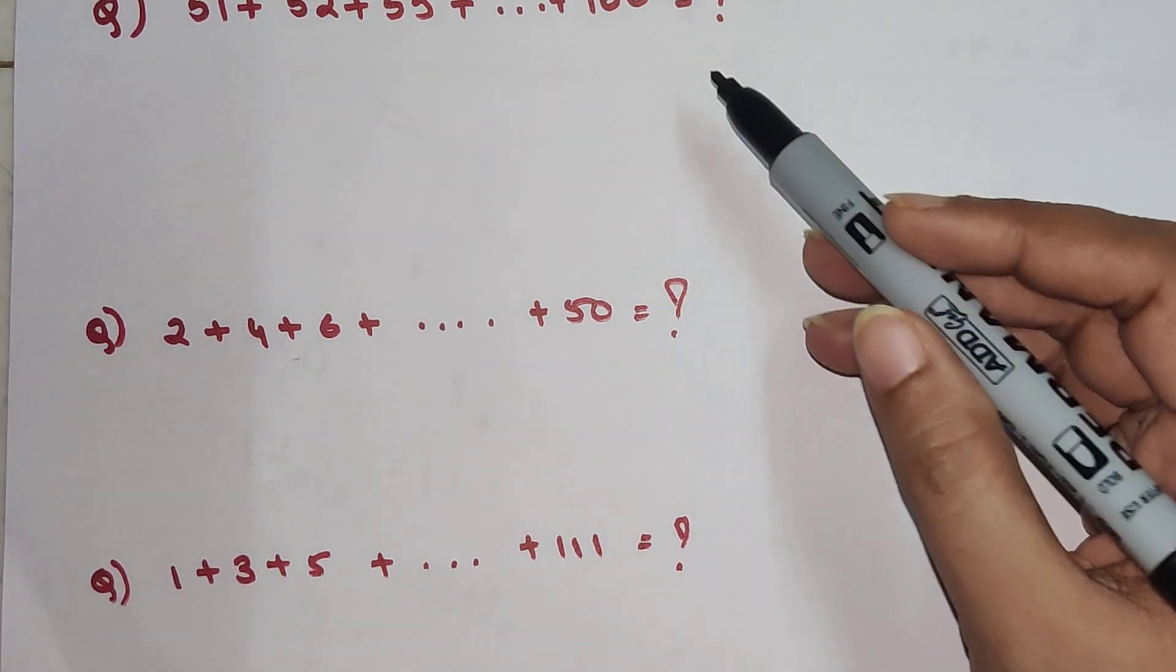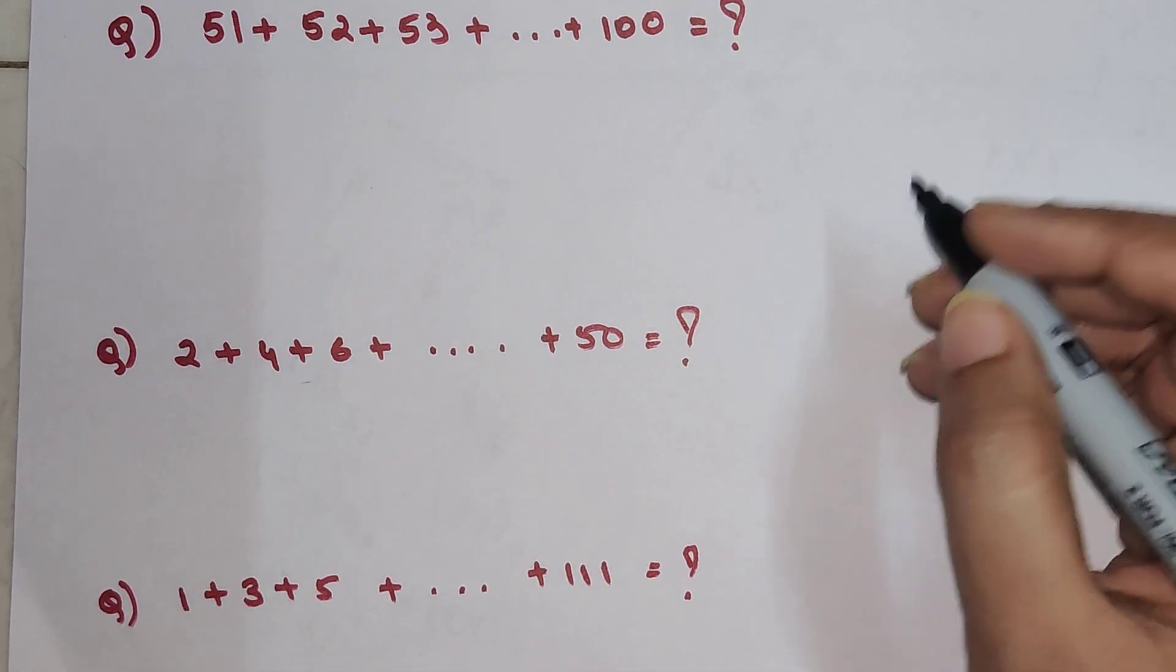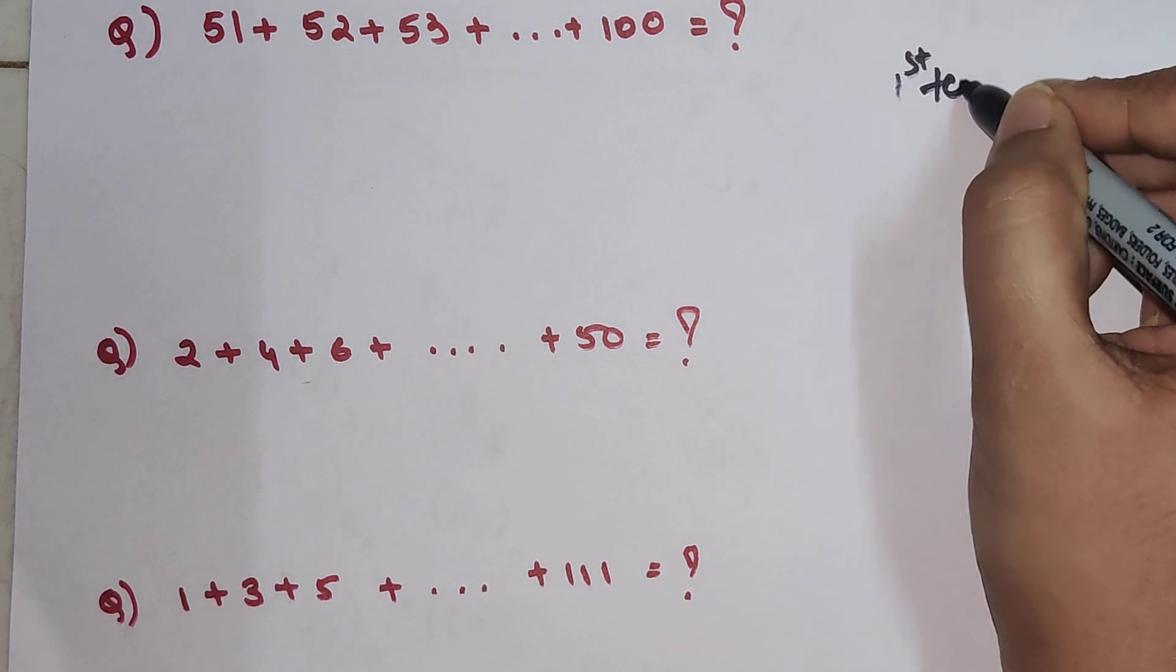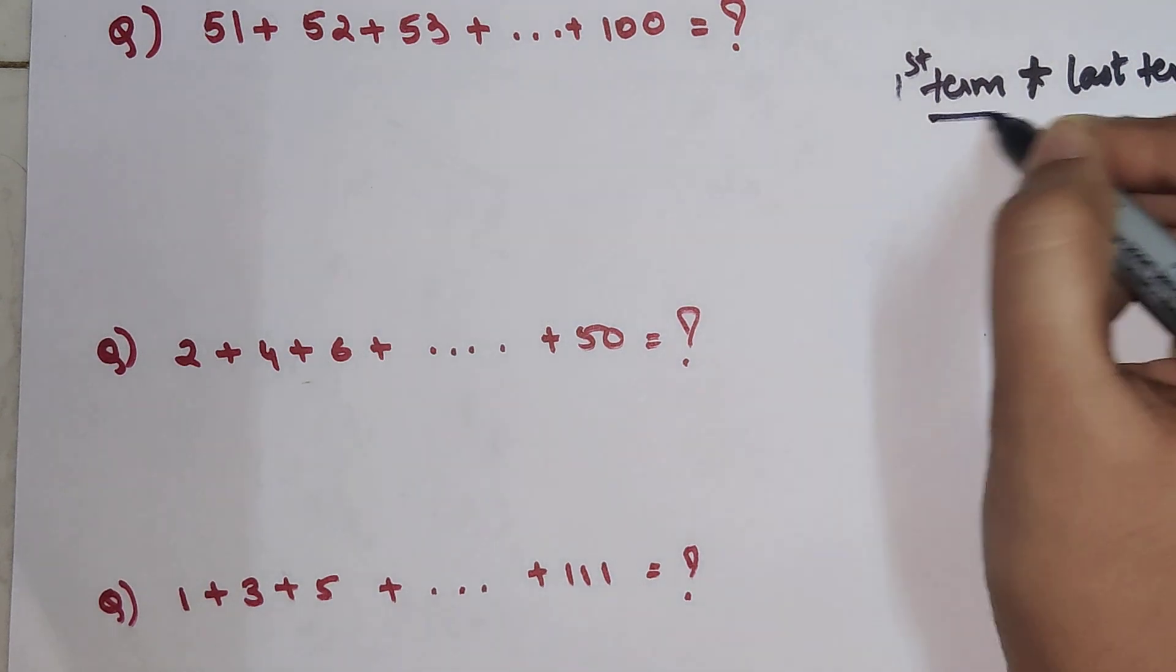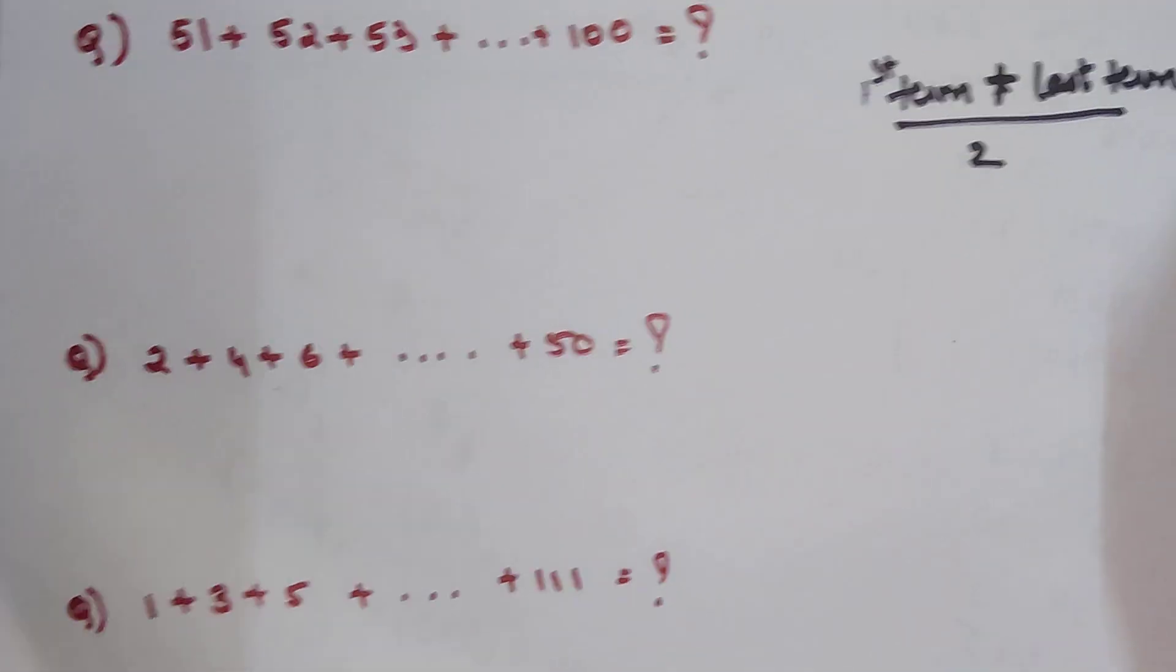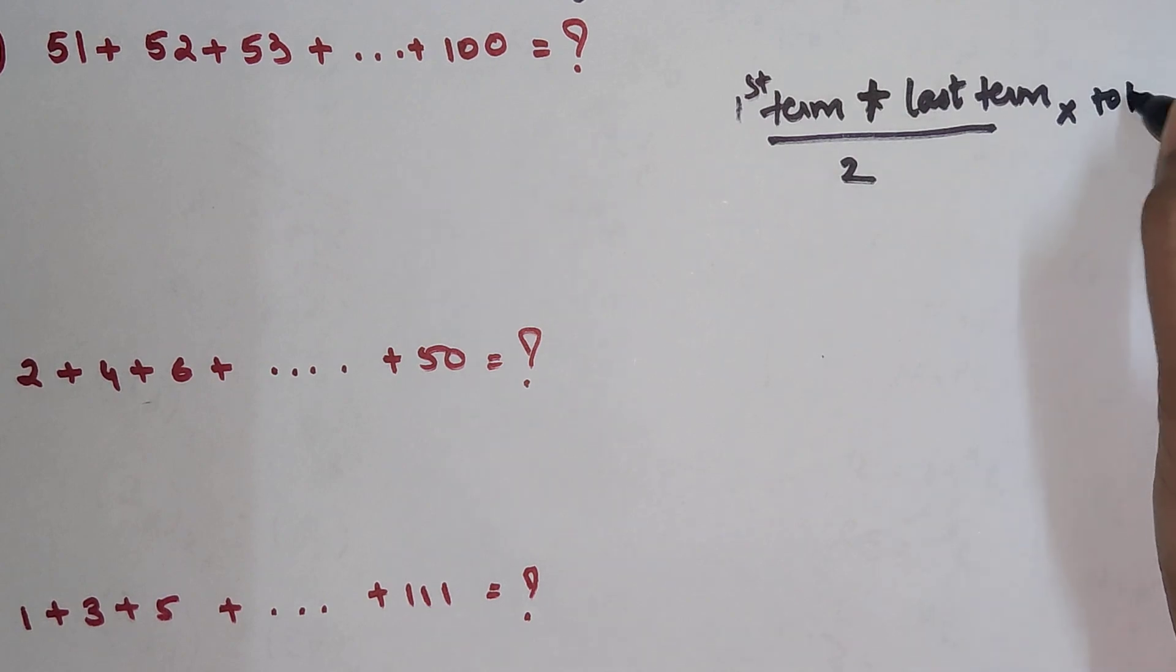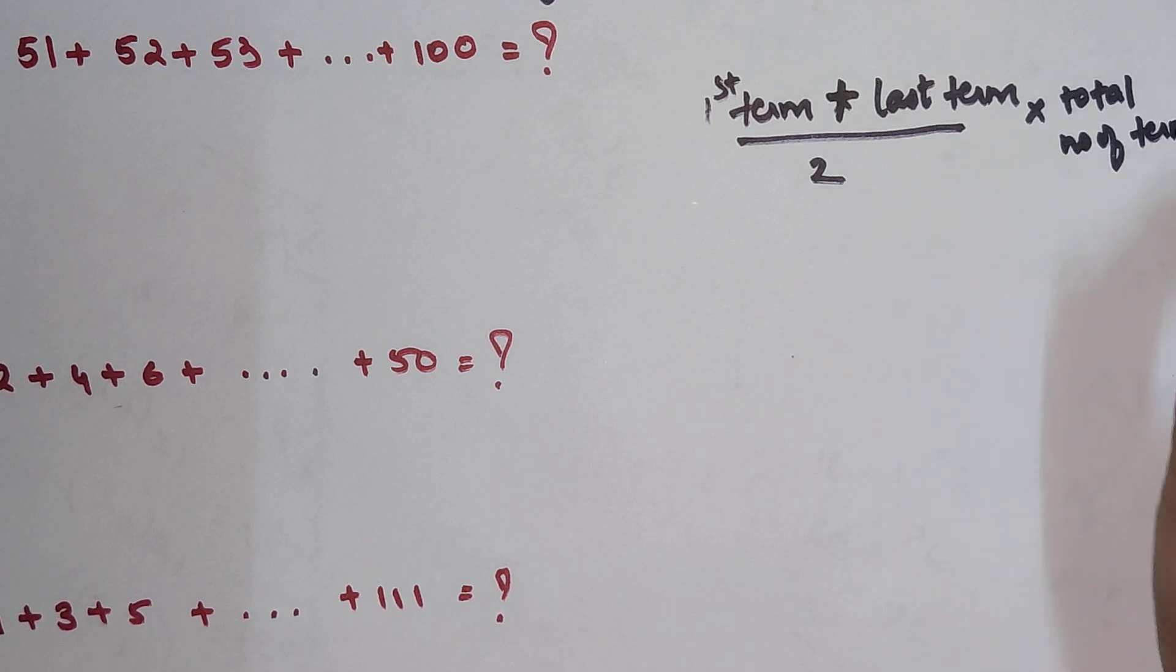That is why I have taken these three different cases when you have to use that particular formula. So the formula is nothing but first term plus last term divided by 2, multiplied by the total number of terms. You just have to find the total number of terms.